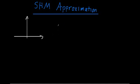Welcome back. In the last video, we had talked about a qualitative definition of simple harmonic motion. We said that simple harmonic motion results from small displacements about a stable equilibrium. So in this video we're going to show what that means mathematically.